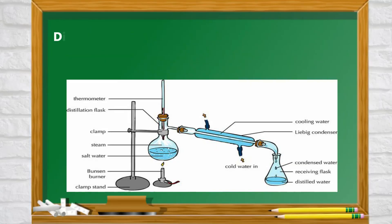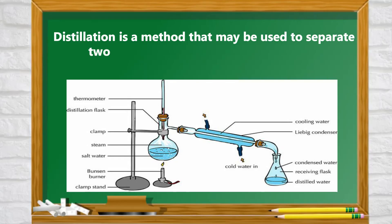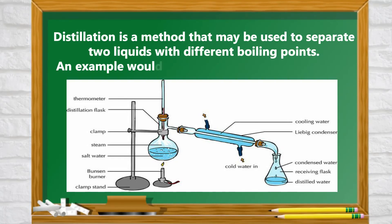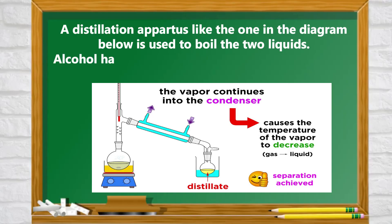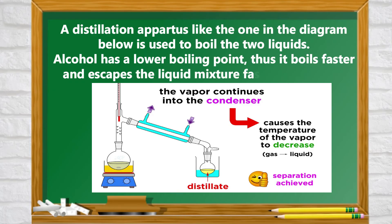Distillation. Distillation is a method that can be used to separate two liquids with different boiling points. An example would be separating alcohol and water. A distillation apparatus, like one in the diagram below, is used to boil the two liquids. Alcohol has a lower boiling point, thus it boils faster and escapes the liquid mixture faster than water.